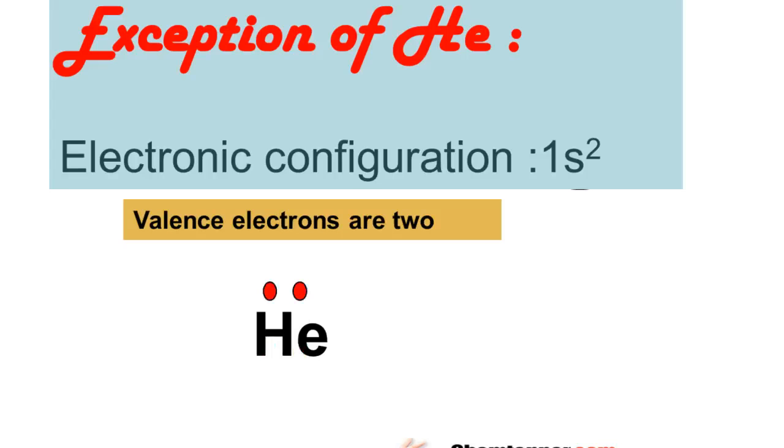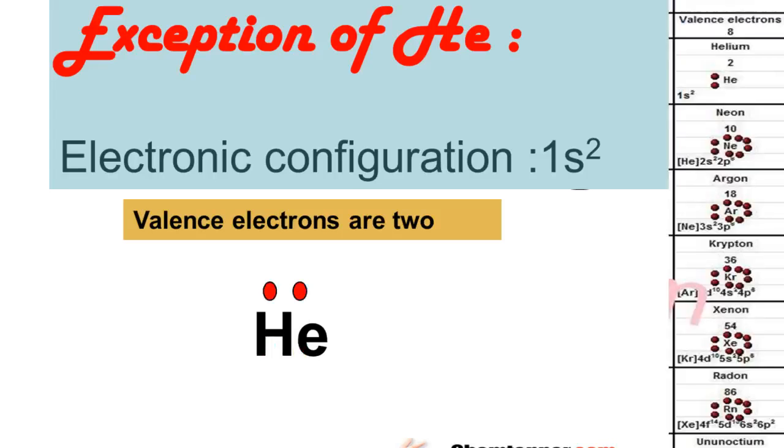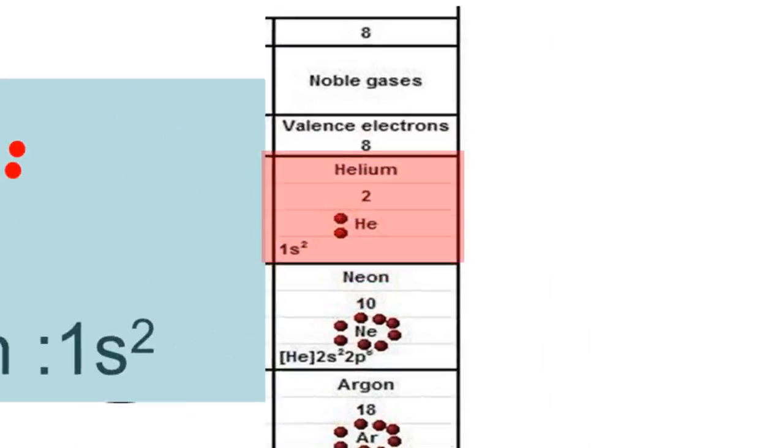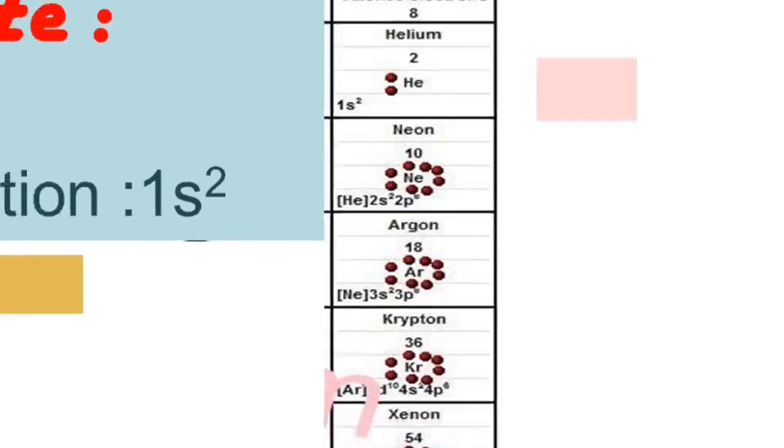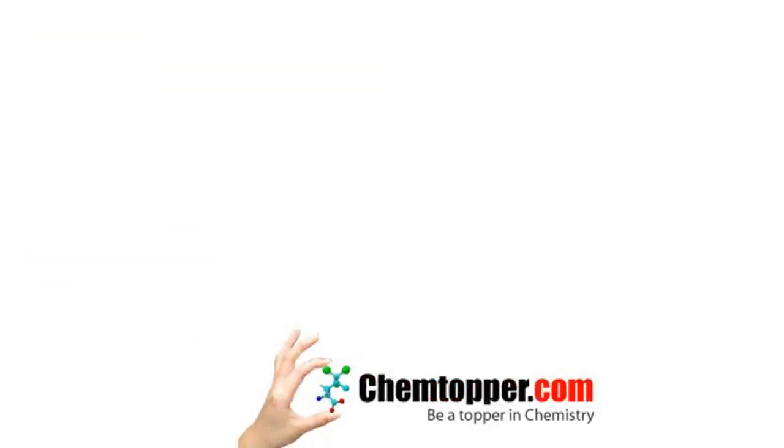Whereas in rest of the elements, they have 8 dots around the symbol of the element. Here, you can see the difference in the Lewis dot symbol helium with rest of the elements. So, helium has only 2 dots around its symbol.